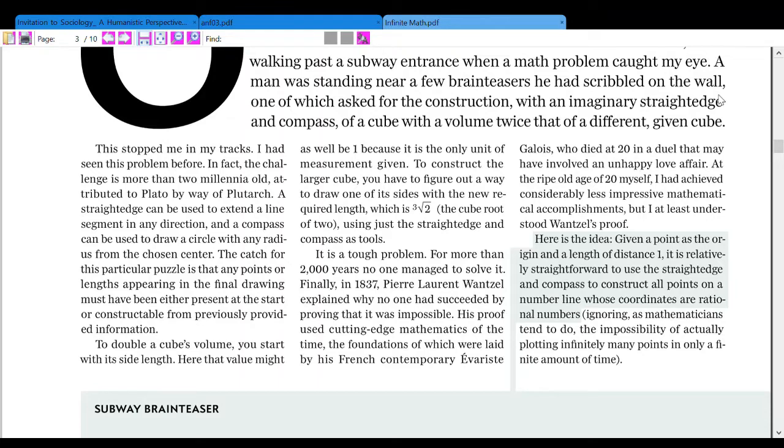It is a tough problem. For more than 2,200 years, no one managed to solve it. Finally, in 1837, Pierre Laurent Wantzel explained why no one had succeeded by proving that it was impossible. His proof used cutting-edge mathematics of the time, the foundations of which were laid by his friend's contemporary Évariste Galois, who died at 20 in a duel that may have involved an unhappy love affair. At the ripe old age of 20 myself, I had achieved considerably less impressive mathematical accomplishment, but I at least understood Wantzel's proof.